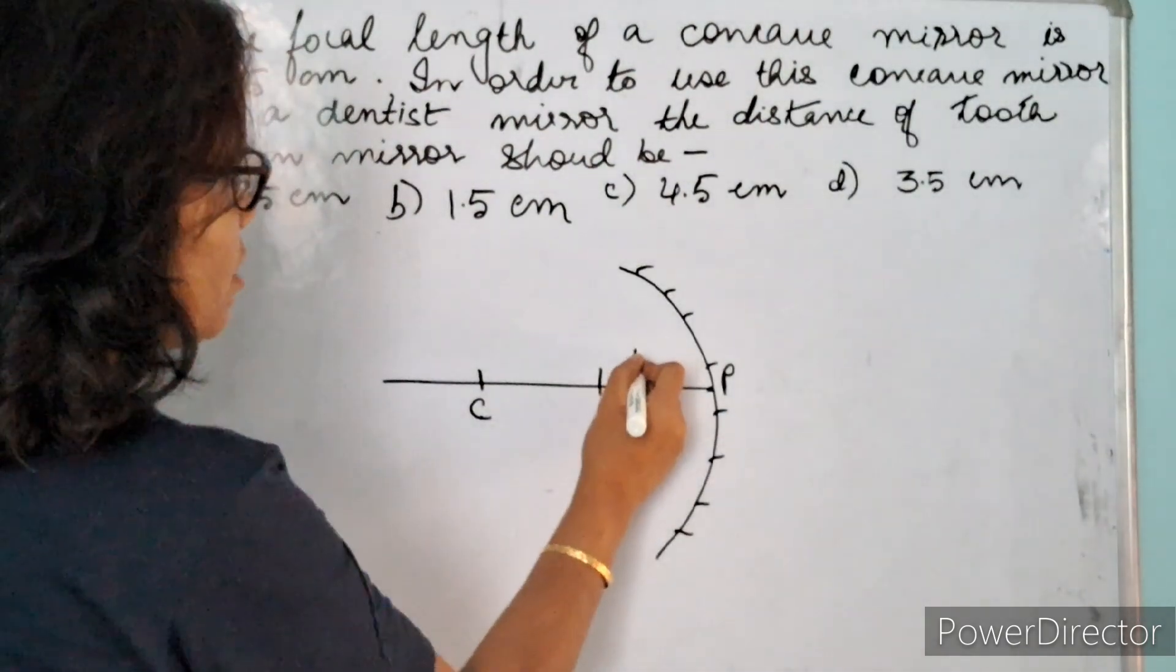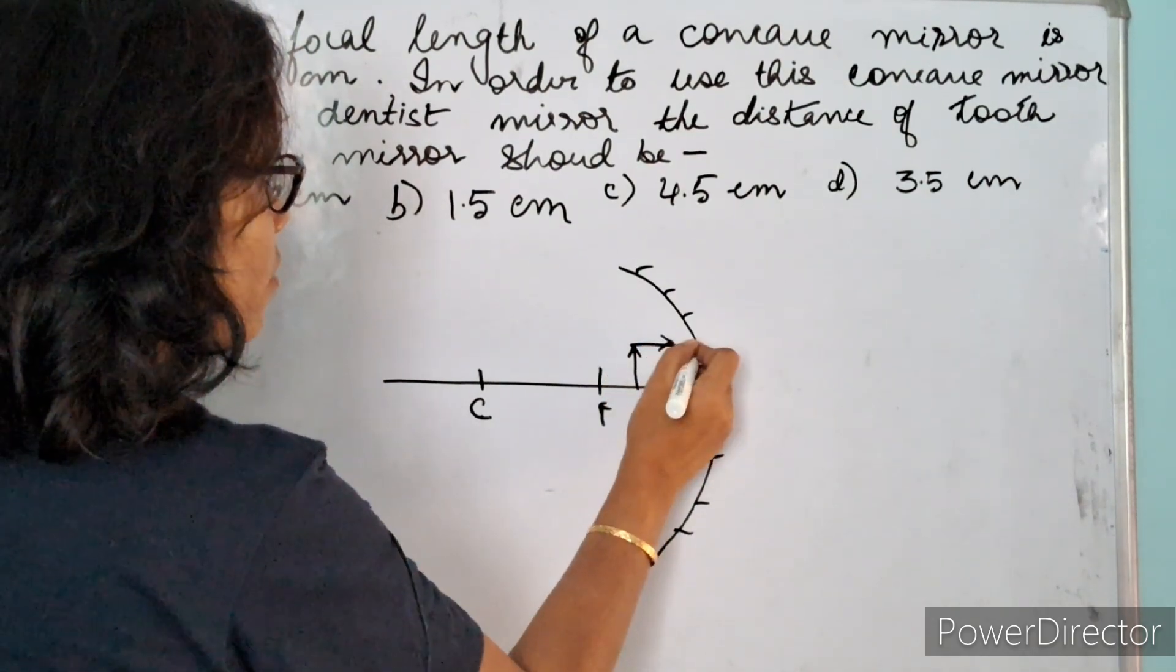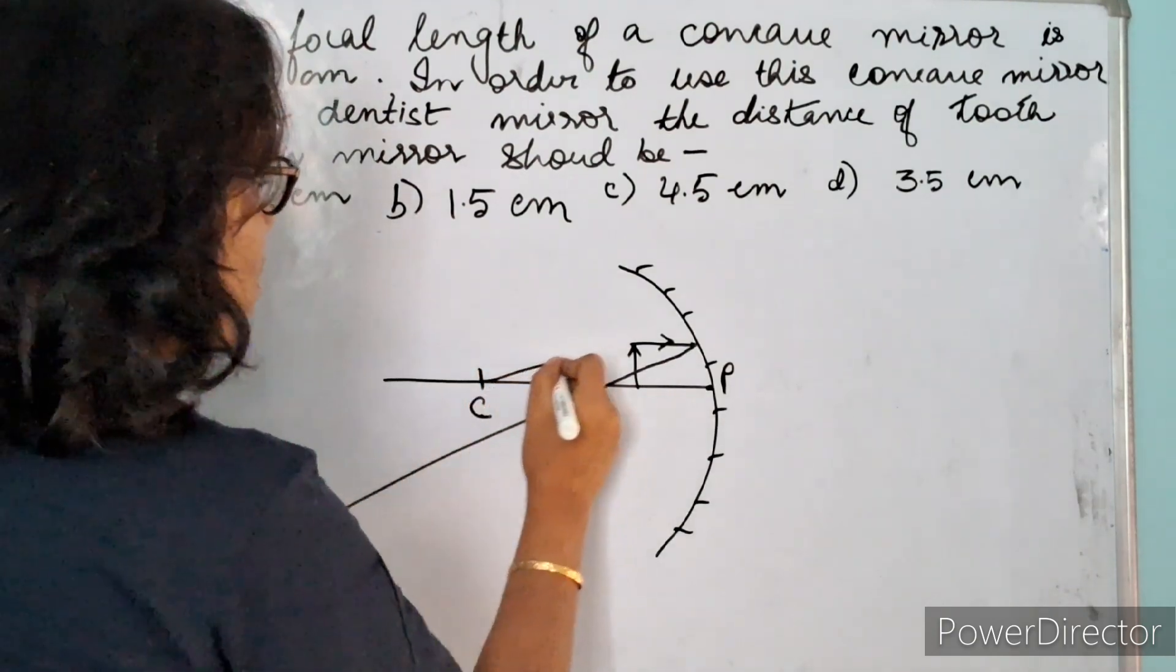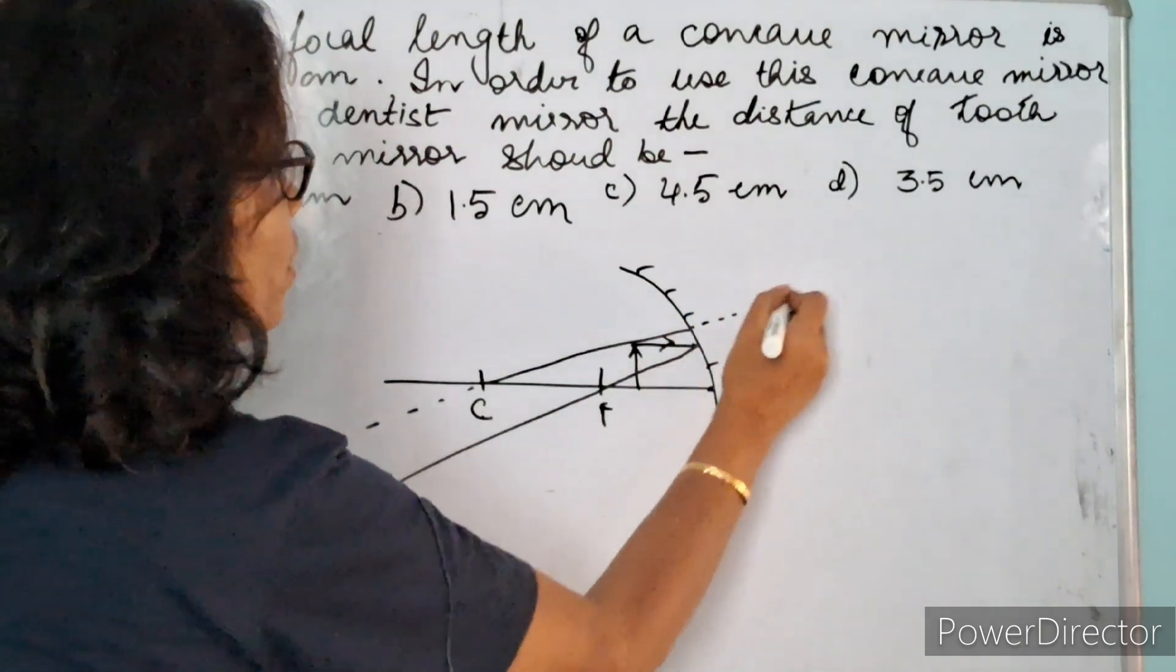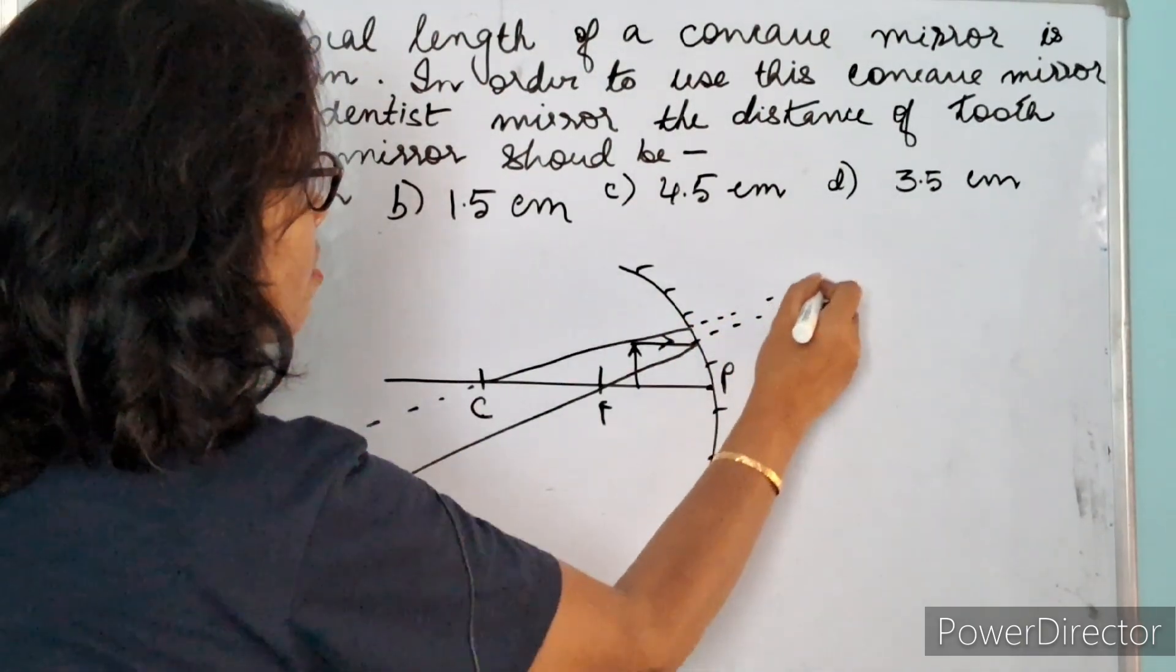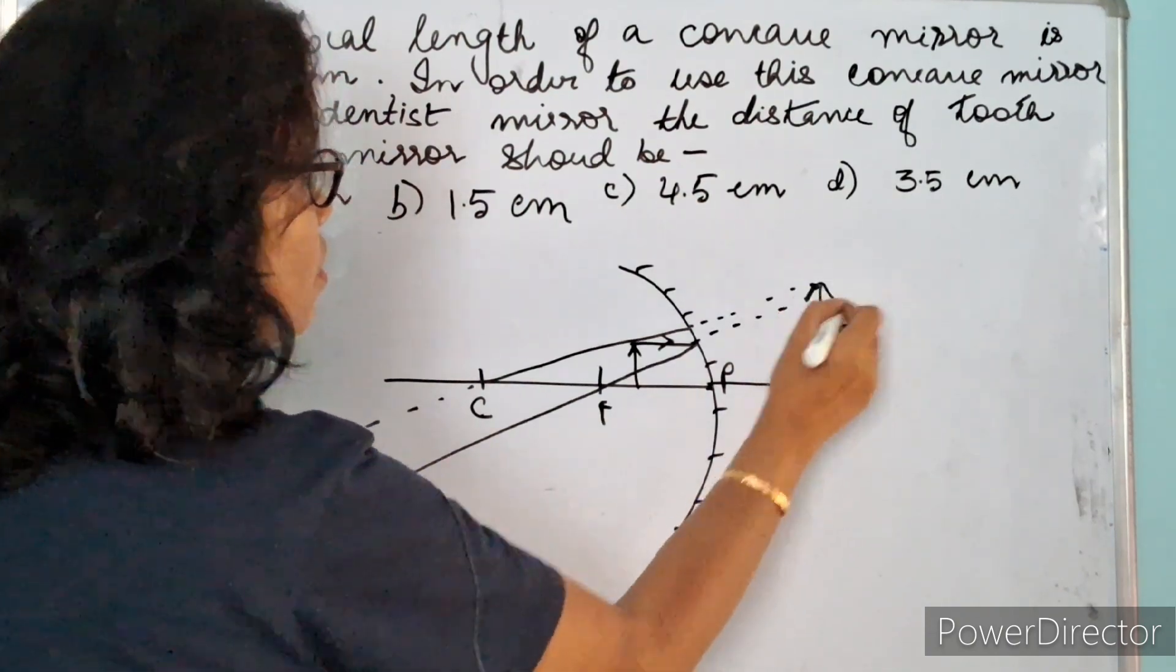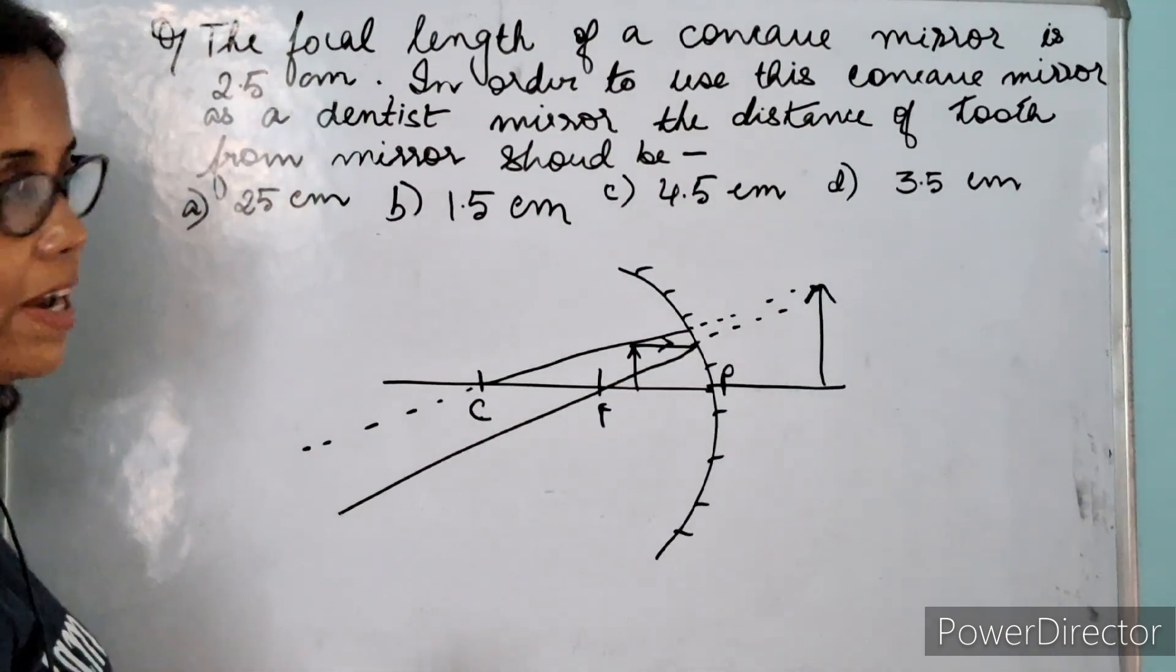What happens when the object is placed between pole and the focus? This is the object, so one ray, the reflected ray will pass through the focus, another one will pass through the center of curvature and these two rays will meet at this point. So the image which is formed is virtual, erect and magnified.